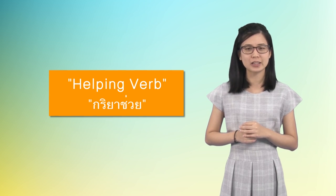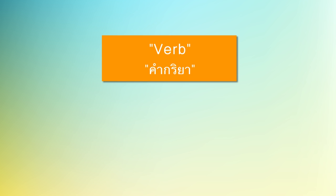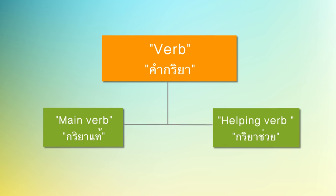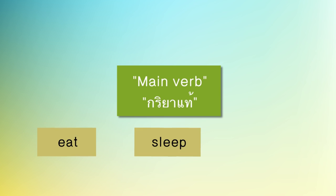แล้วอะไรคือ verb ช่วย? โดยปกติแล้ว verb ในภาษาอังกฤษสามารถแบ่งได้เป็น 2 ลักษณะใหญ่ตามการปรากฏและความสำคัญทางความหมาย นั่นคือ main verb หรือ verb แท้ และ helping verb หรือ verb ช่วยค่ะ Verb แท้จะมีลักษณะคือสามารถปรากฏตามลำพังในประโยคได้ และเป็นคำกริยาที่ให้ความหมายหลักในประโยค หากขาด verb แท้ไปจะทำให้ประโยคไม่สมบูรณ์ ยกตัวอย่างเช่น eat, sleep, write